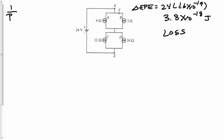So 1 over R total is going to equal 1 over 6 plus 1 over 3. And then, of course, we'll need to invert that again. And that's going to come out to be 2 ohms. Now let's get the resistance between the 12 and 24. So 1 over R total equals 1 over 12 plus 1 over 24. And that comes out to be 8 ohms.